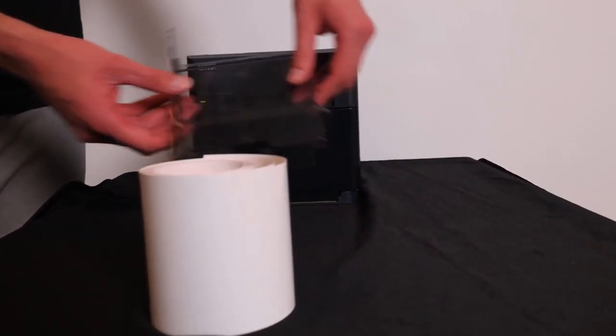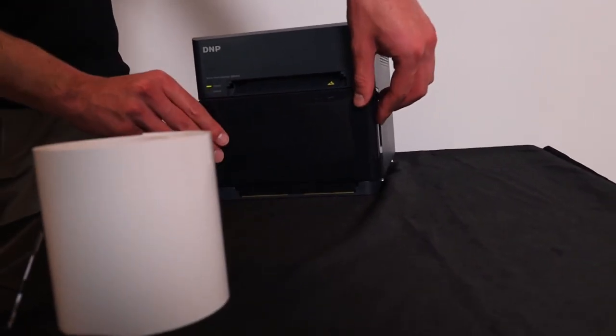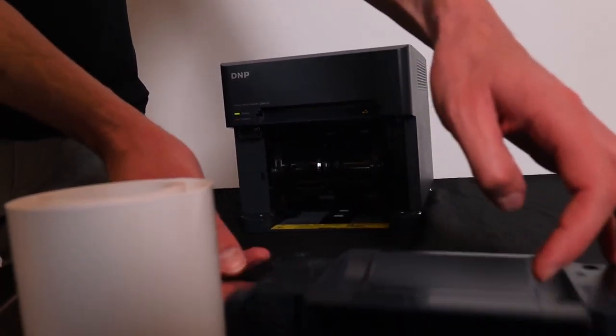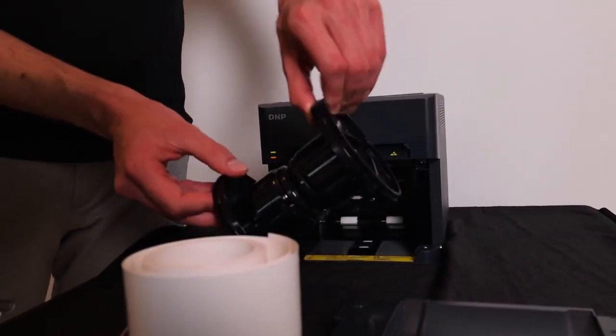The tray for the photo can be taken out. Then we can click off this front panel in order to complete the process. And then we can remove the two roll holders.